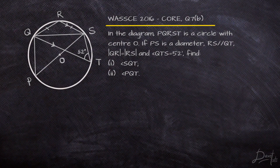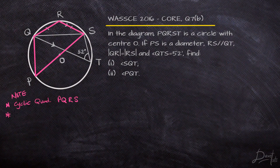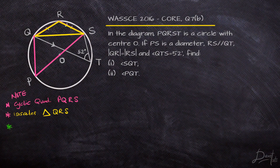We need to find angles SQT and PQT, given that RS is parallel to QT, QR equals RS in length, and angle QTS is 52°. We have a cyclic quadrilateral PQRS — remember, opposite angles of a cyclic quadrilateral are supplementary. We can also see an isosceles triangle QRS, with two equal sides QR and RS drawn in yellow. Furthermore, lines RS and QT are parallel, and there are properties peculiar to parallel lines when a transversal crosses them — these are the guiding principles for solving the question.